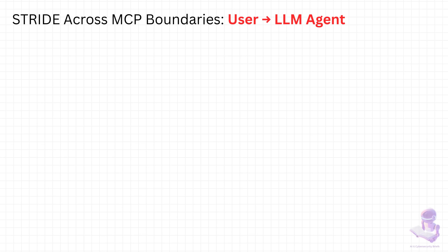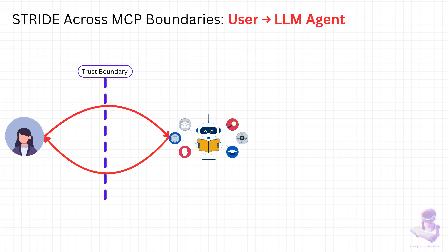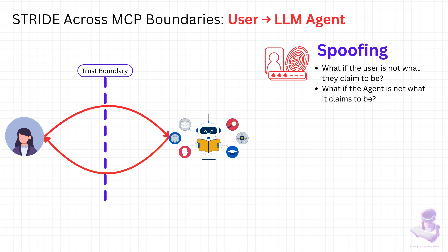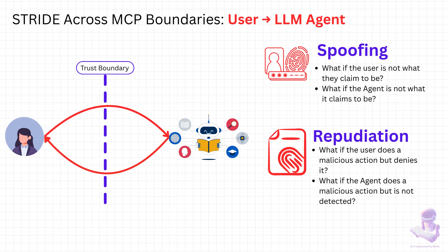The first boundary we need to think about is between the user and the LLM agent — this is a critical trust boundary. Two main STRIDE categories apply here. First, spoofing: what if the user is not who they claim to be? An attacker could impersonate a legitimate user to gain access. Or, from the other side, what if the agent itself is spoofed, tricking the user into trusting responses from a malicious system? Second, repudiation: what happens if someone carries out a malicious action but later denies it? Without proper logging, a user could claim they never gave an instruction, or the agent itself could execute actions that go unnoticed and unaccounted for. This boundary shows why authentication, trust, and auditability are so important before we even let the agent touch any real data.